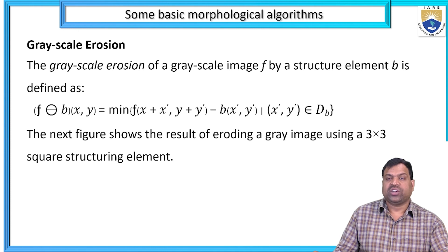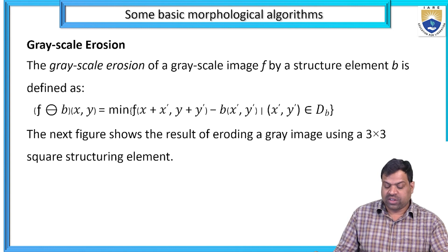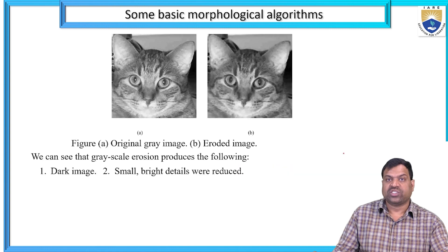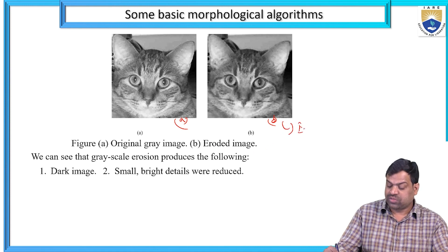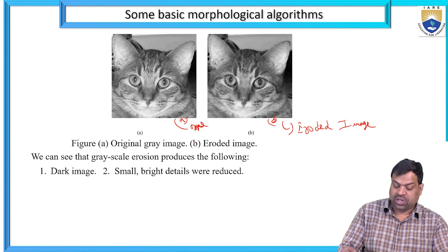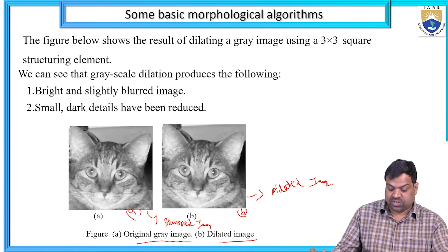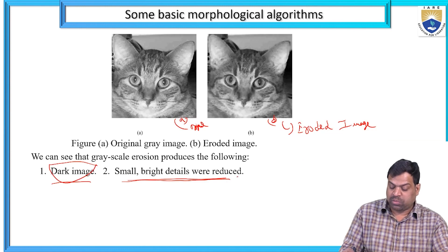Greyscale erosion: the greyscale erosion of a greyscale image f by a structuring element B is defined as: (f⊖B)(x,y) = minimum of [f(x+x', y+y') - B(x', y')]. The eroded grey image uses a 3×3 structural element. Figure A is the original grey image and figure B is the eroded image. Greyscale erosion produces a dark image where small, bright details are reduced.